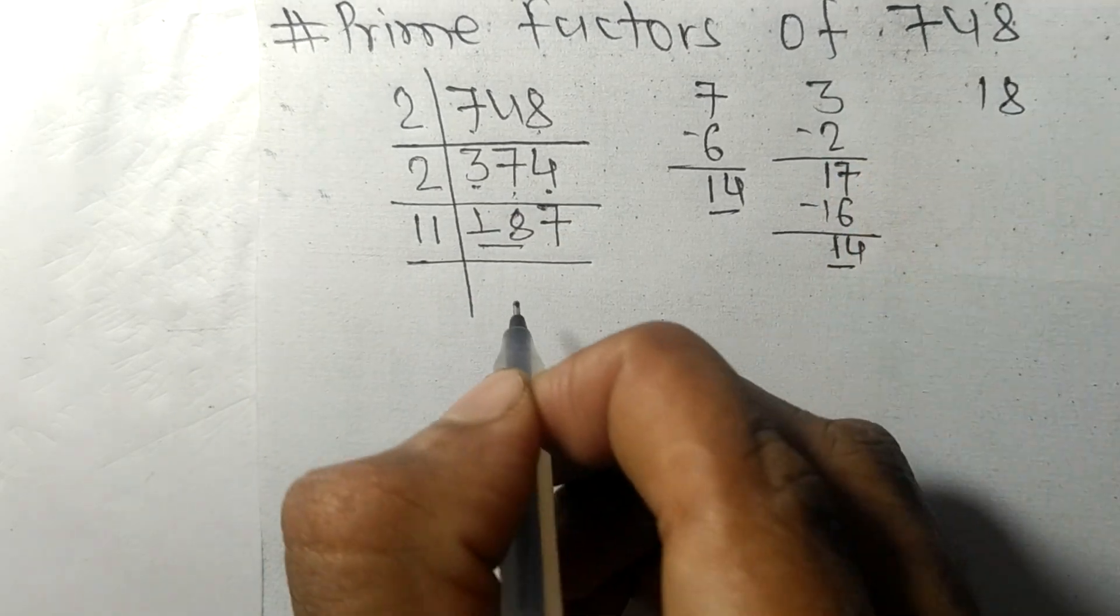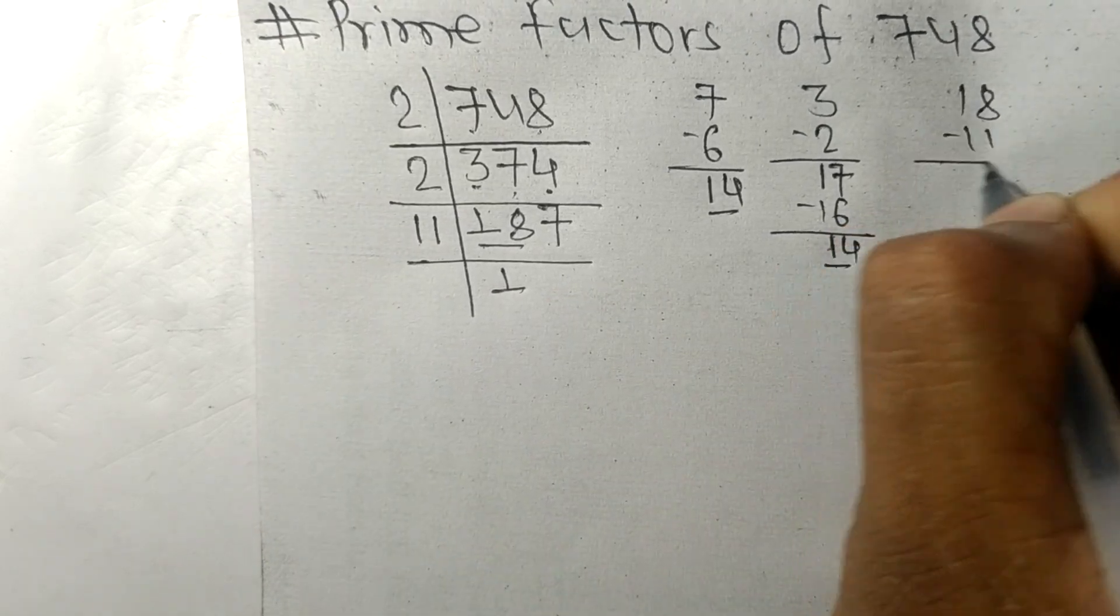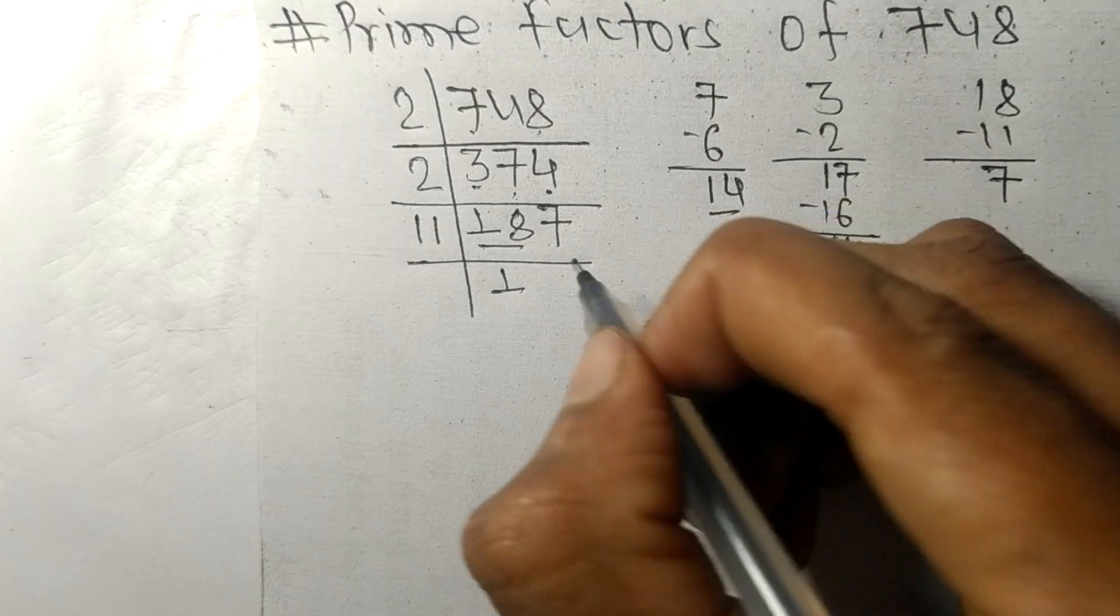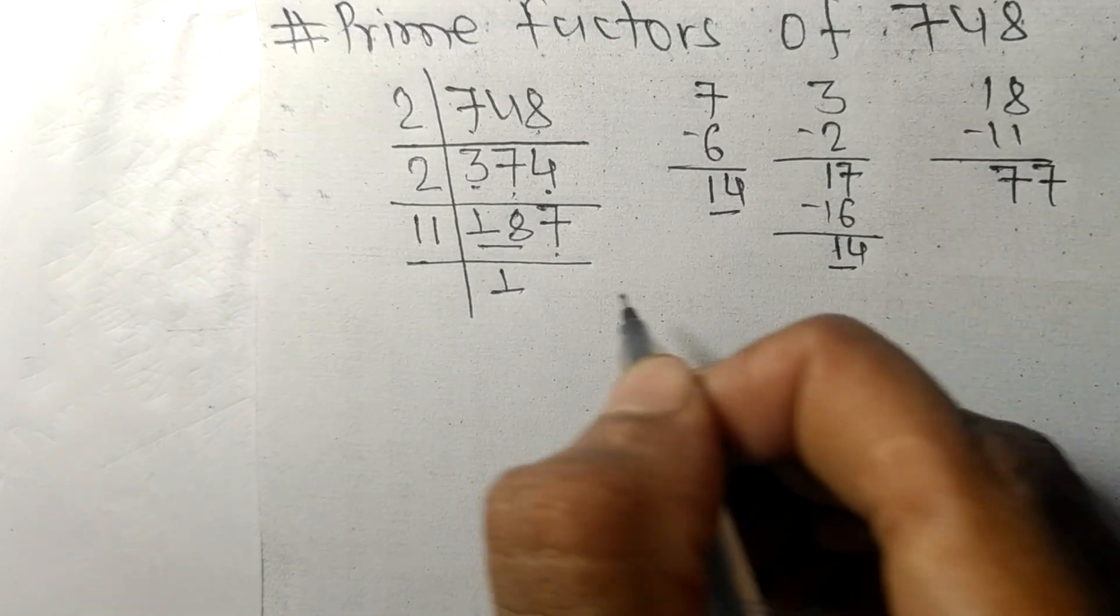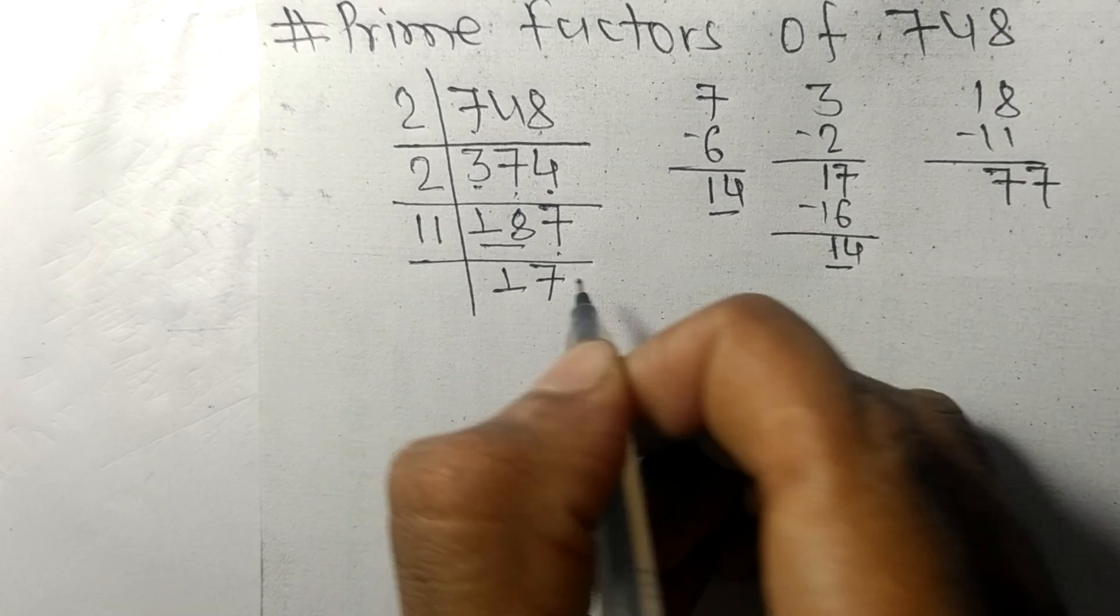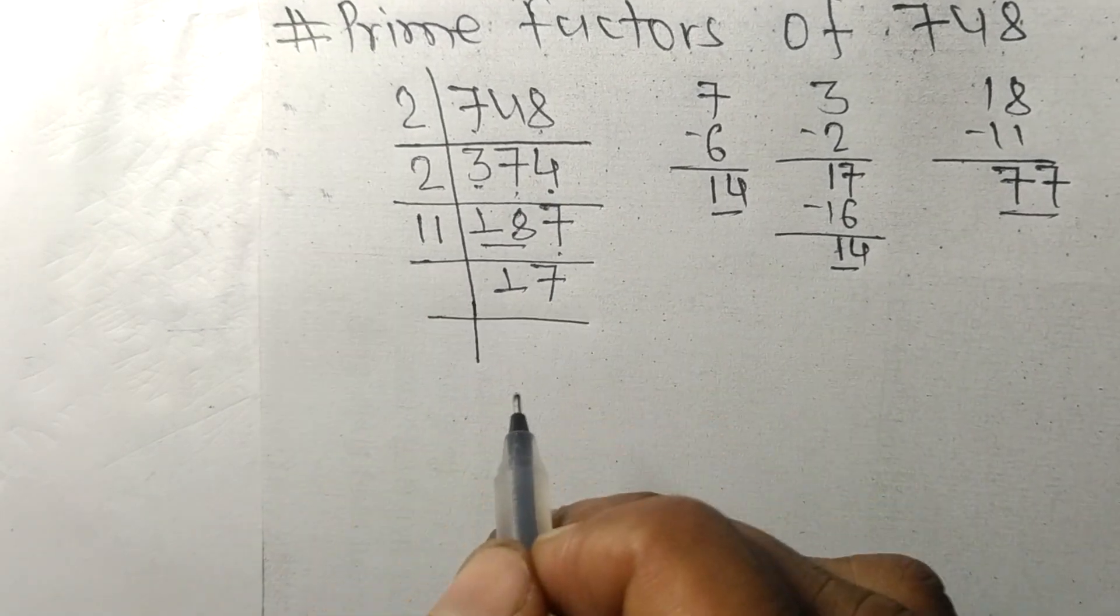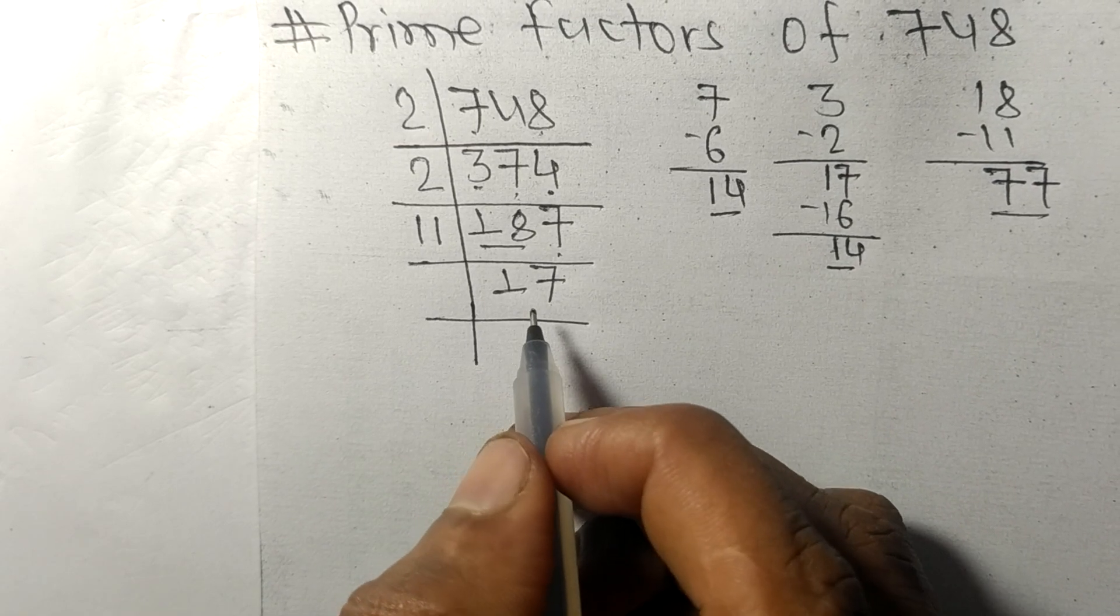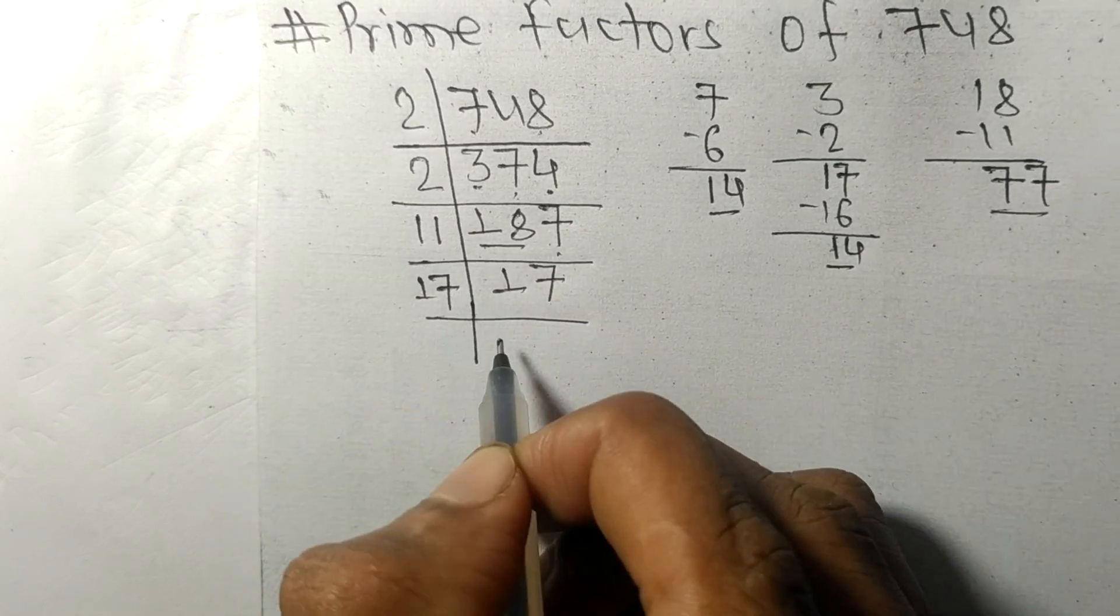...so 11 times 1 equals 11. On subtracting we get 7, and this 7 makes 77. 11 times 7 equals 77. Now we got 17 which is our prime number, so it is exactly divisible by 17 only.